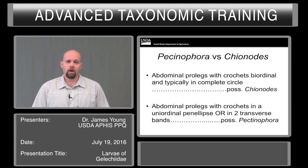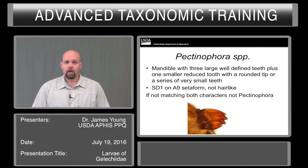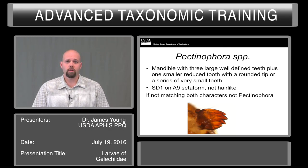To separate the larvae, one thing to look at is the abdominal prolegs. They have crochets in a biordinal and typically complete circle in Gelechiids, whereas in Pectinophora, the abdominal prolegs have crochets in a uniordinal ellipse or two transverse bands. Additional characters to confirm that it is Pectinophora include looking at the mandible.